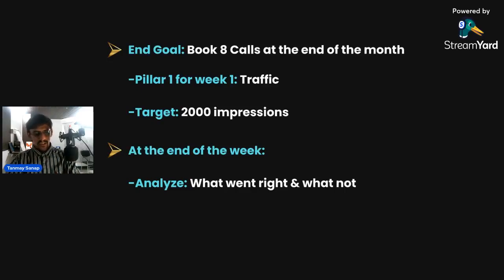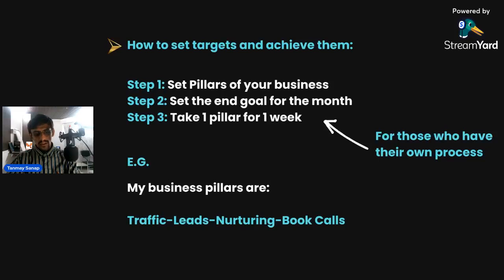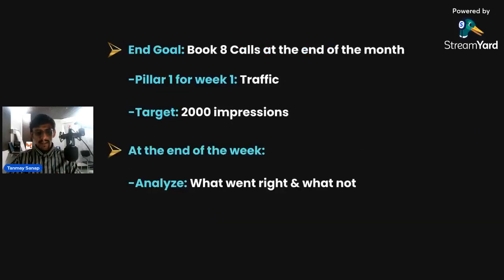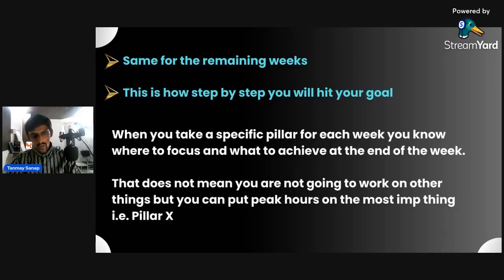If you manage to get 70–80 quality leads out of 2,000 traffic, that's a good win. Then go to pillar three — nurturing — and start nurturing those leads. Exclude all other traffic and focus only on those 70–80 people, move them towards booking calls. Every single week you focus on each goal and achieve the targets. Step by step, that's the process. This is what I tell my clients as well.